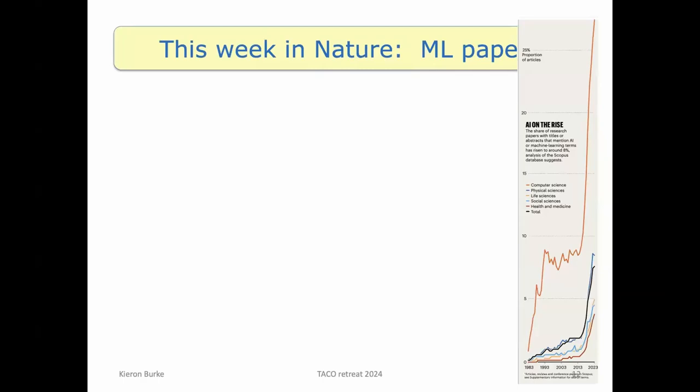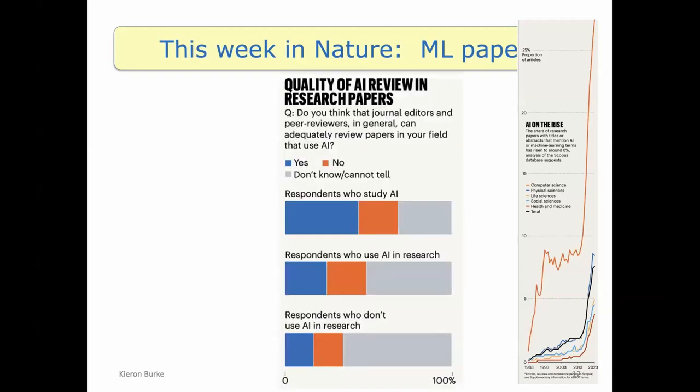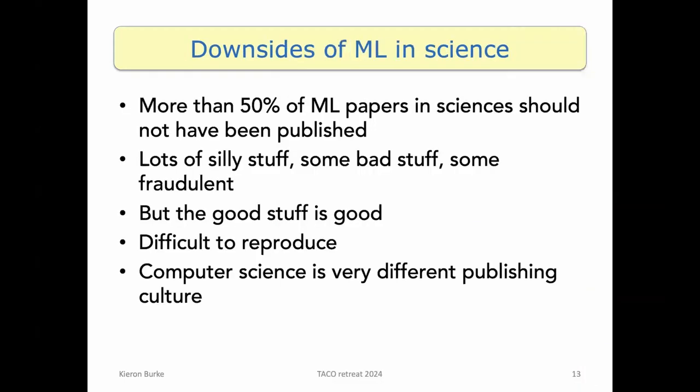You may not be able to see it at the back. This is a fraction of papers in computer science using machine learning, and this is 25%, but it's probably hit 50% already this year. You know, it's just taking over. But there's a blue line here that's going up to about 8%, obviously past 10% now. That's in physical sciences, the fraction of papers that have machine learning in them. So the virus has appeared in our field, right?